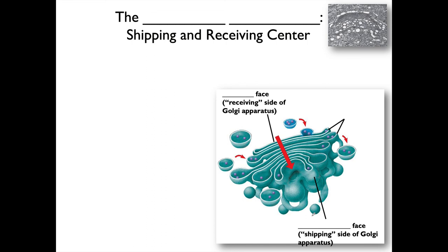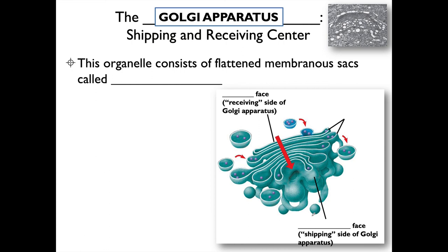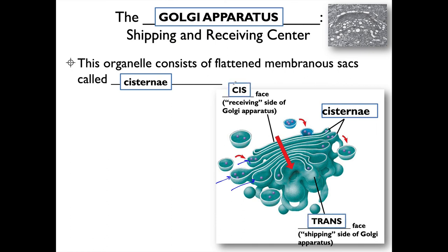Next on the pathway of the endomembrane system is the Golgi apparatus. The best way to think of it is as a shipping and receiving center — the Amazon of the cell: products come in, products go out, and some get tweaked on the inside. The organelle consists of flattened membranous sacks called cisternae. It has two faces: the cis face, which receives products from the ER, and the trans face, the shipping side, which sends vesicles toward the cell membrane.